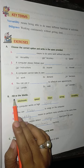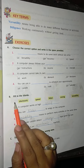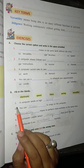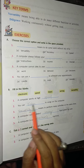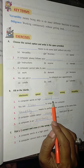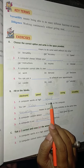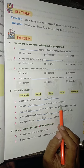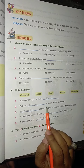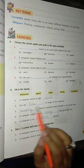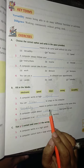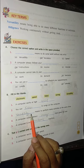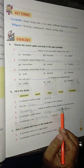Exercise B — fill in the blanks. Question one: a computer works at high blank. Answer: speed. Question two: you can blank to listen to songs on the computer. Answer: listen to songs. Question three: blank means to perform many activities at the same time. Answer: versatility means to perform many activities at the same time.